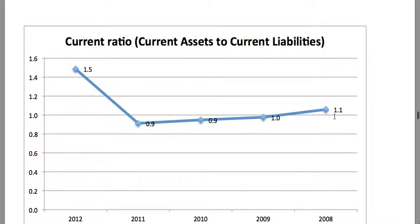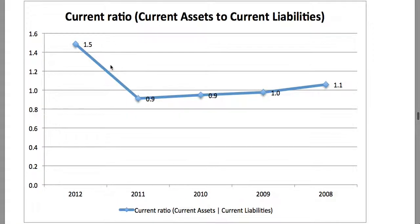The current ratio — current assets to current liabilities — has improved. In 2008 it was 1.1 times and now it's 1.5 times. This trend seems very typical of companies on the JSE at the moment: they are bolstering their short-term positions and especially their cash positions, not investing or expanding but rather keeping money back owing to political and economic uncertainty.